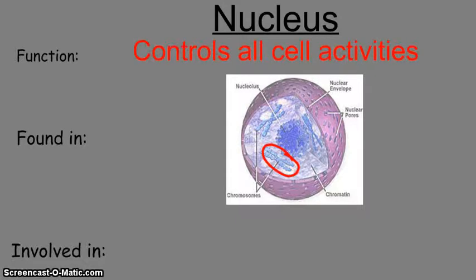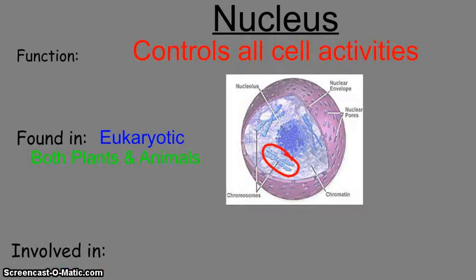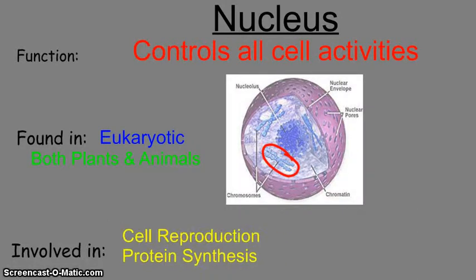The nucleus is found in eukaryotic cells only, which means both plants and animals have a nucleus. You will not see it in bacteria or prokaryotes. It is involved in two main cell processes: cell reproduction and protein synthesis.